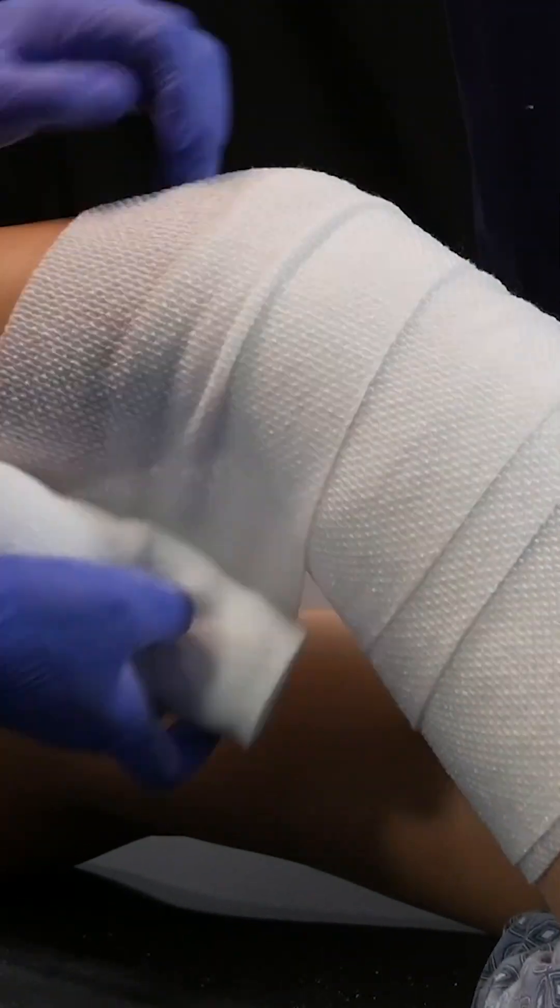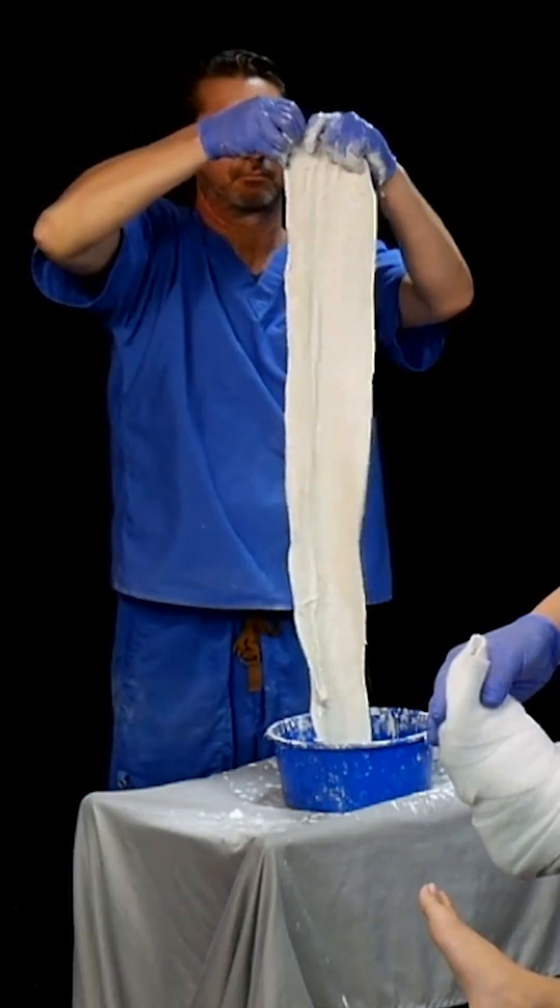Let's go ahead and wrap. For this splint, you're going to need 10 strips of plaster. He's dipping it into the water. The idea is forming 10 pieces of plaster into one piece of plaster.